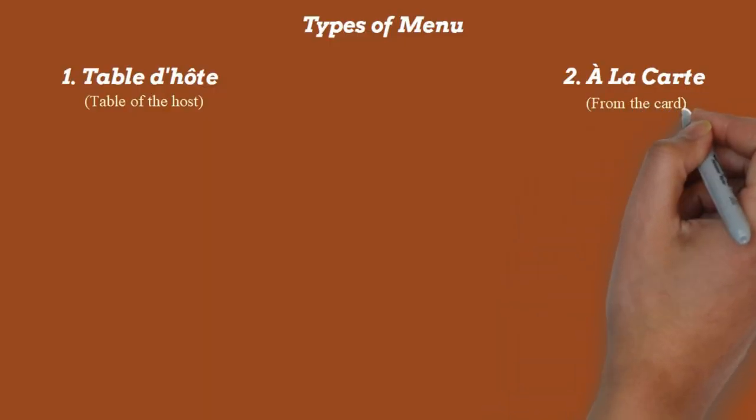The à la carte menu, literally meaning 'from the card,' offers a wide number of choices. You can pick dishes from the menu and create your own selection. The best feature is that each dish is individually priced, so you can order whatever you want, pay only for what you have ordered, and not for anything else.